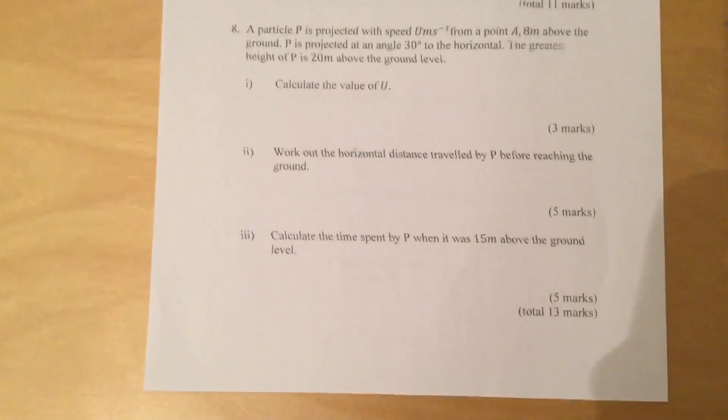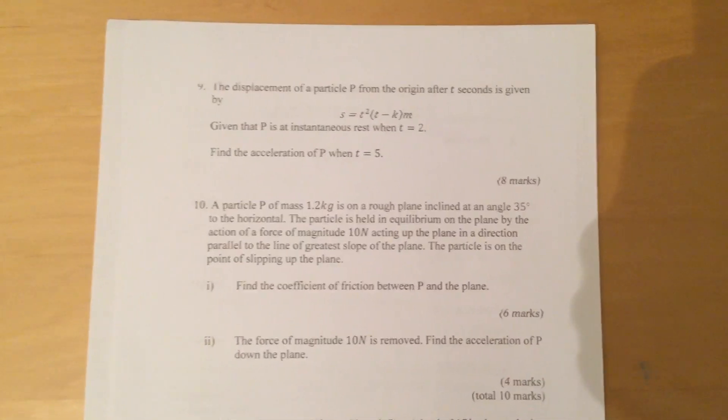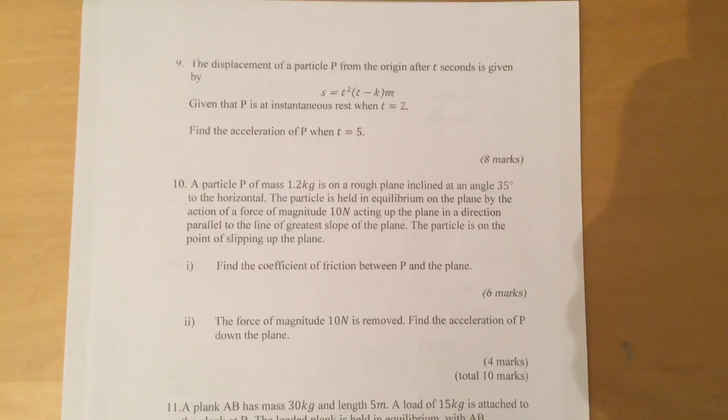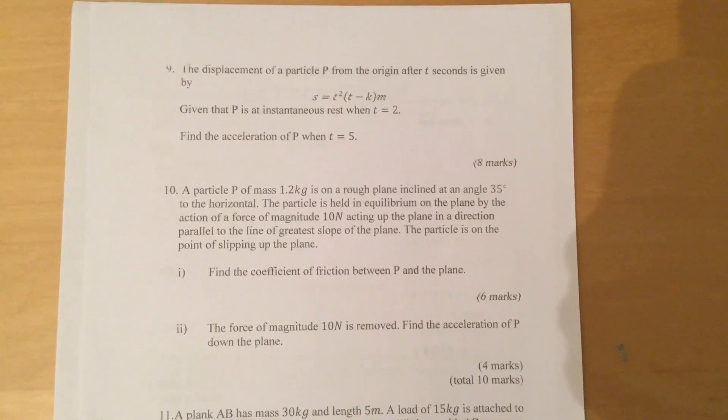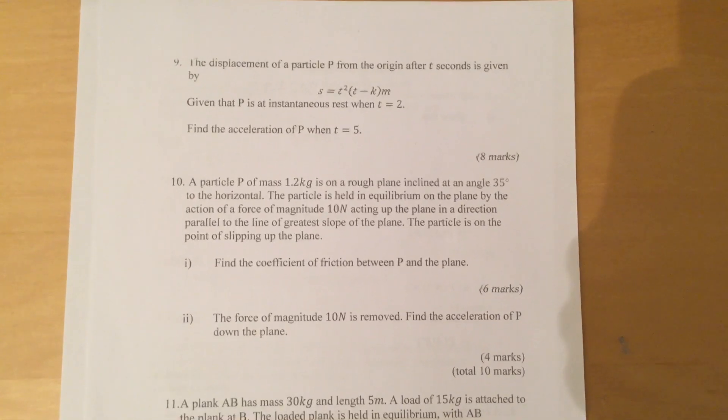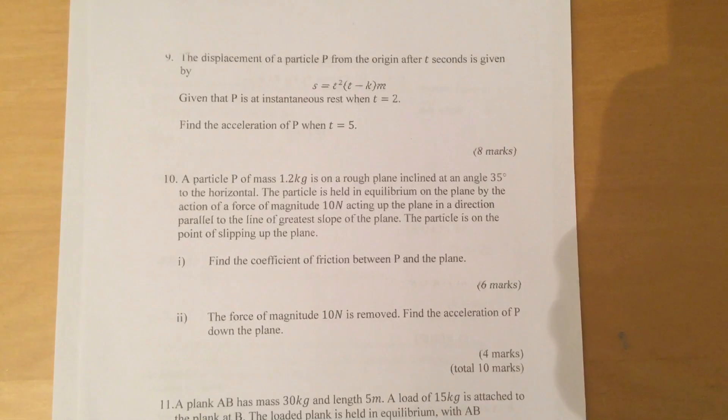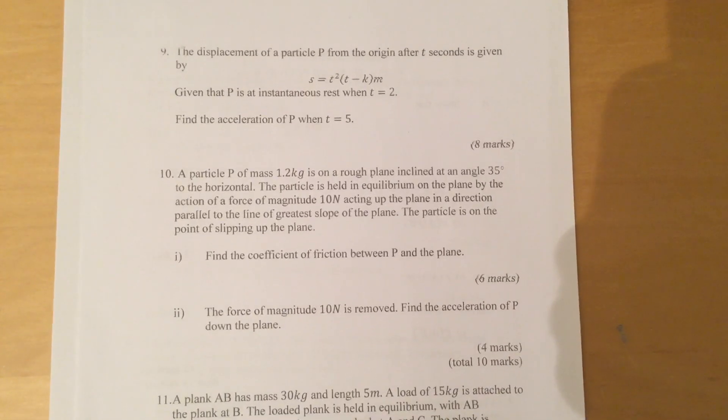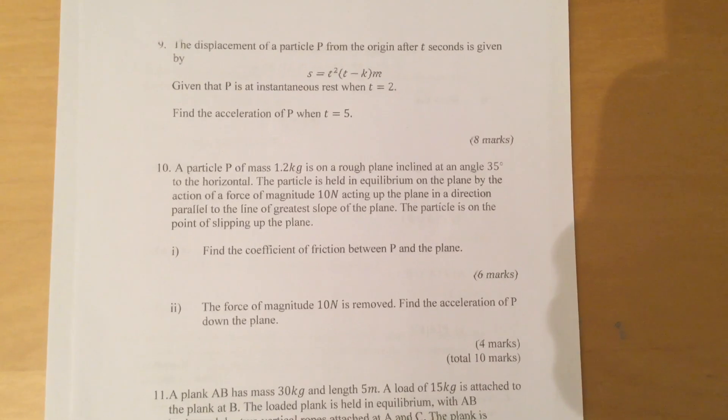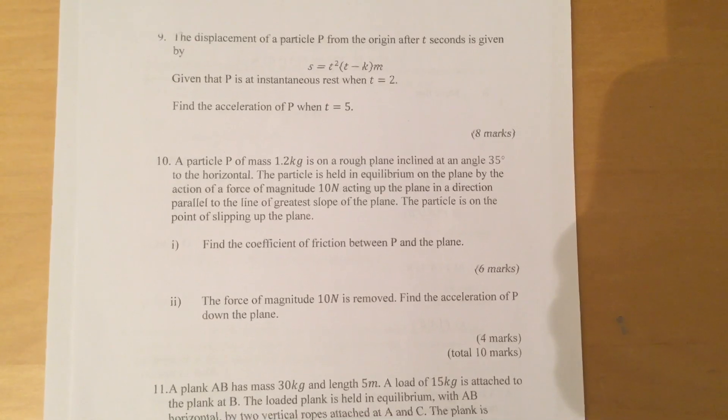Question 9: The displacement of a particle P from the origin after t seconds is given by s equals t squared bracket t minus k meters. Given that P is at instantaneous rest when t equals 2, find the acceleration of P when t equals 5.